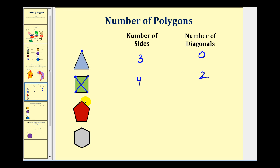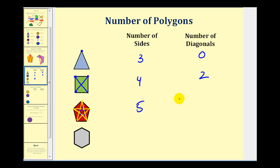For the pentagon, from each vertex there are two diagonals. Going around: one here and one here from this vertex; one here and one here from this vertex; then one more connecting the remaining two vertices. Counting carefully so as not to double count, we get one, two, three, four, five — so there are a total of five diagonals for a pentagon. Five sides, five diagonals.